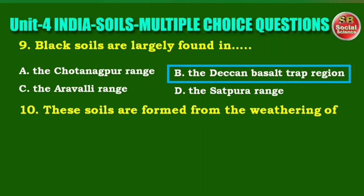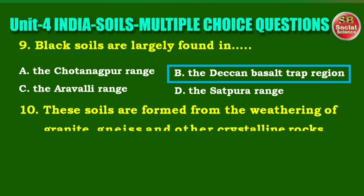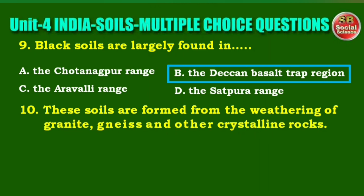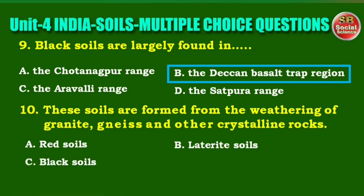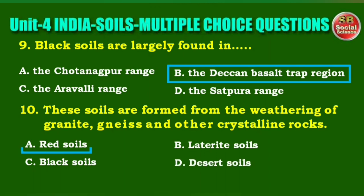Next question: these soils are formed from the weathering of granite, gneiss, and other crystalline rocks. Options are: red soils, laterite soils, black soils, desert soils. The right answer is option A, red soils.